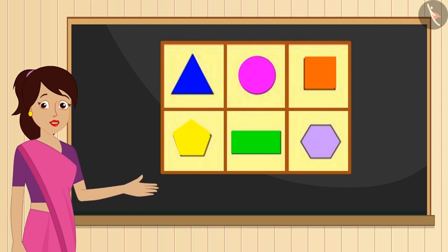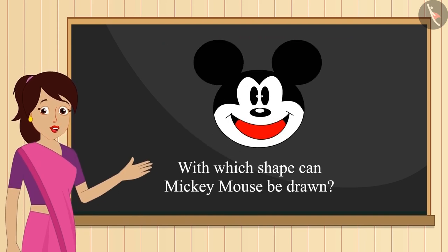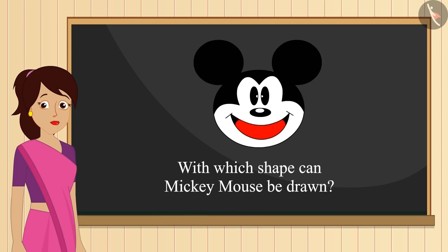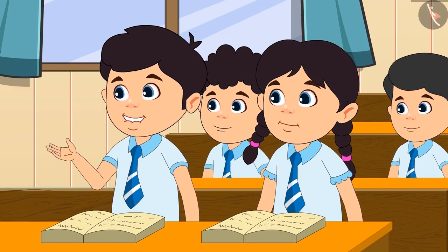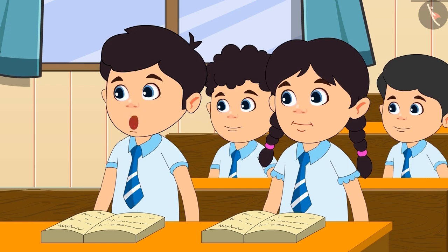So come on, now tell me with which shape you can draw the character Mickey Mouse. It can be drawn by joining six circles.